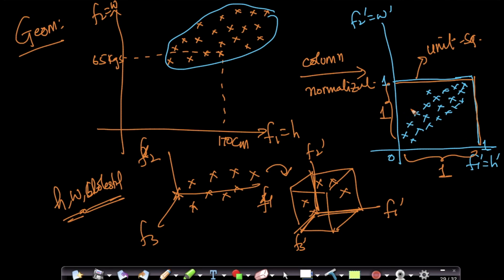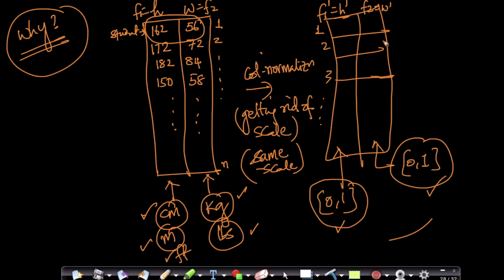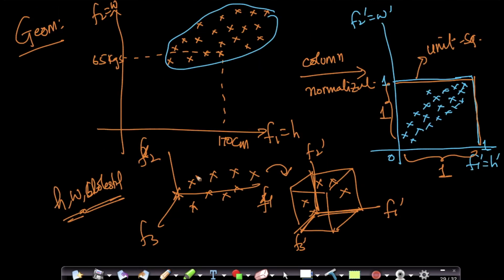We'll see why this is useful. At least one thing you understand is we're getting rid of scales — getting rid of whether the data is in centimeters, meters, or feet for heights, whether it's in kilos or pounds — and getting everything into the same format. This data normalization or column normalization is an extremely important task that we'll perform over and over again through all of our modeling. In the next video, we'll see what data standardization is — a similar operation, but slightly different.